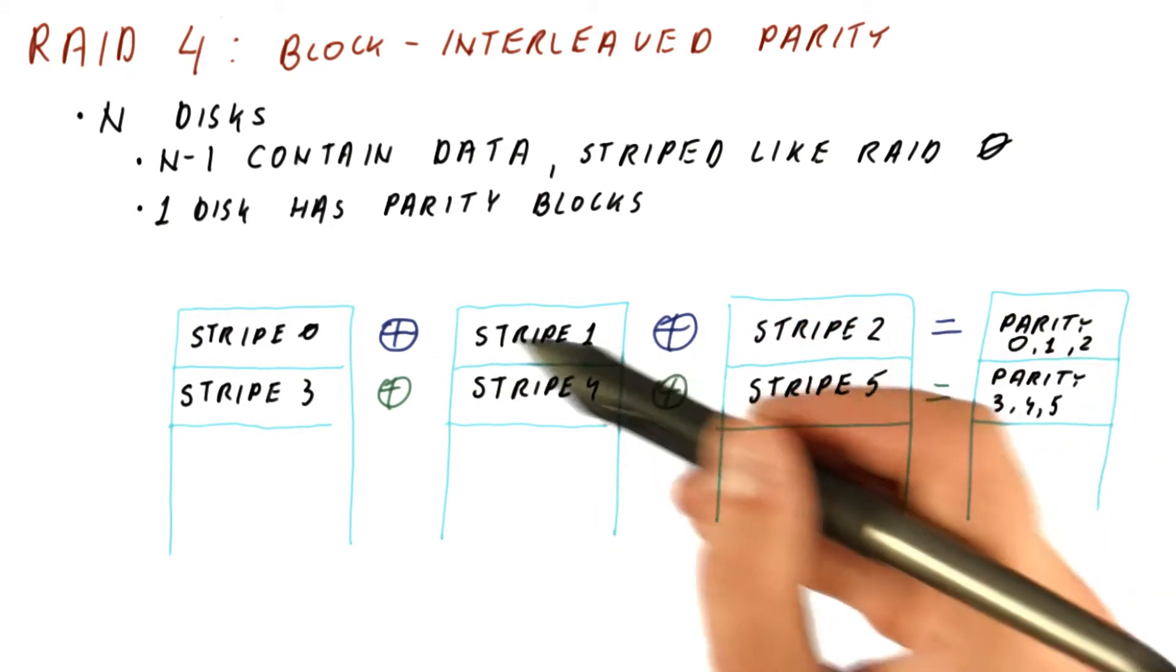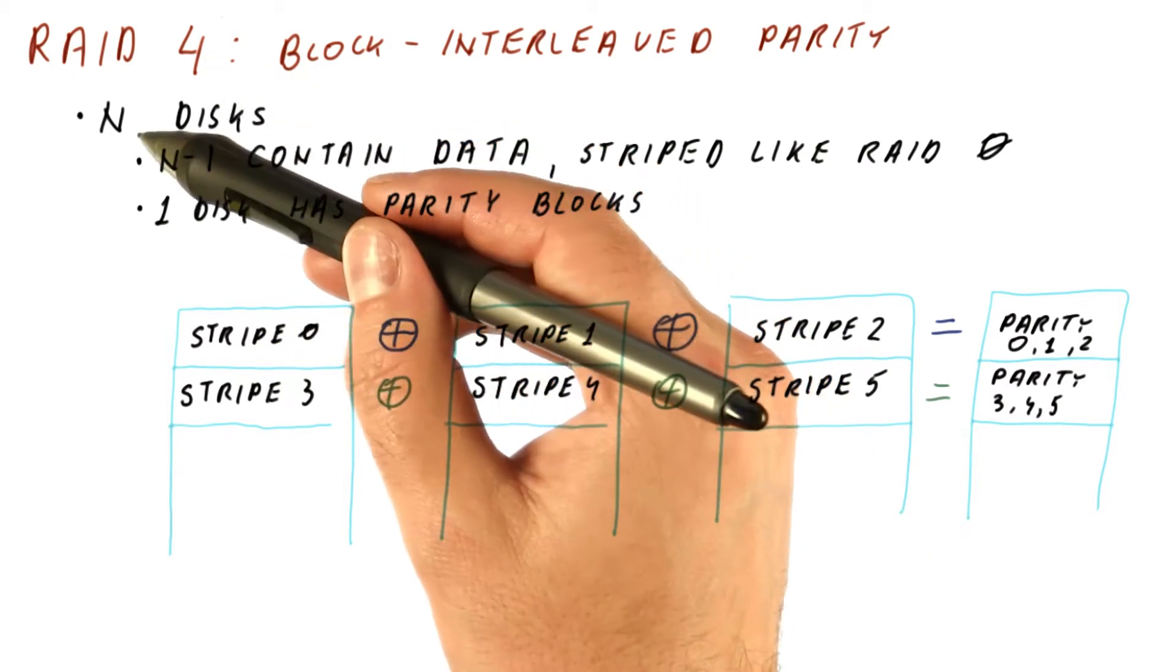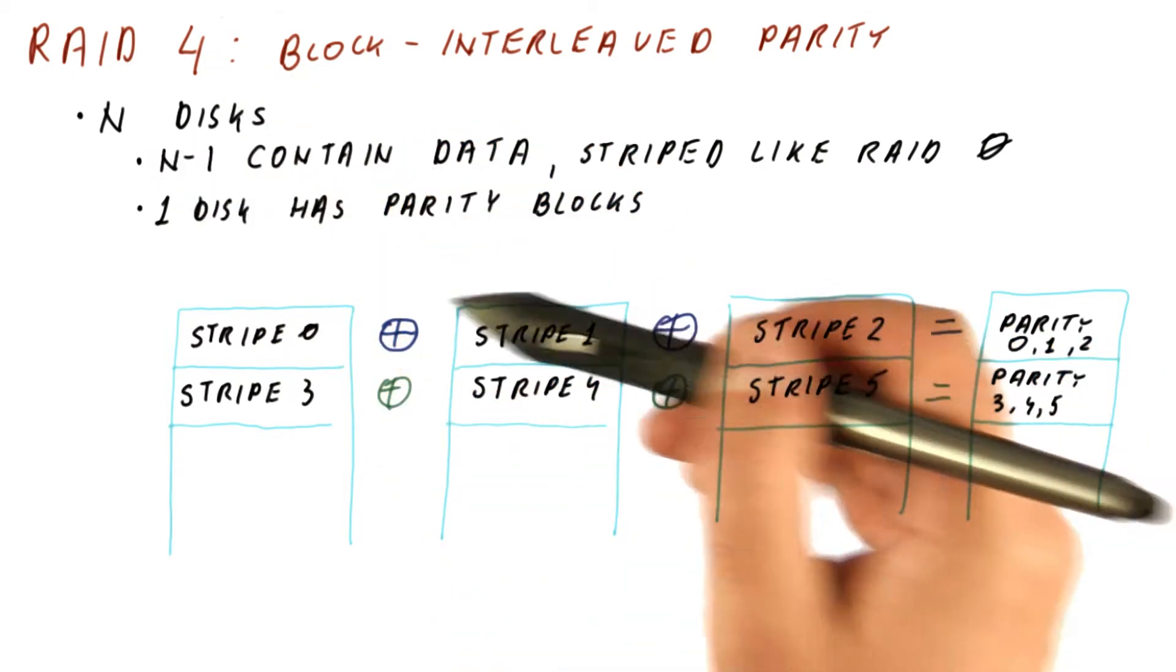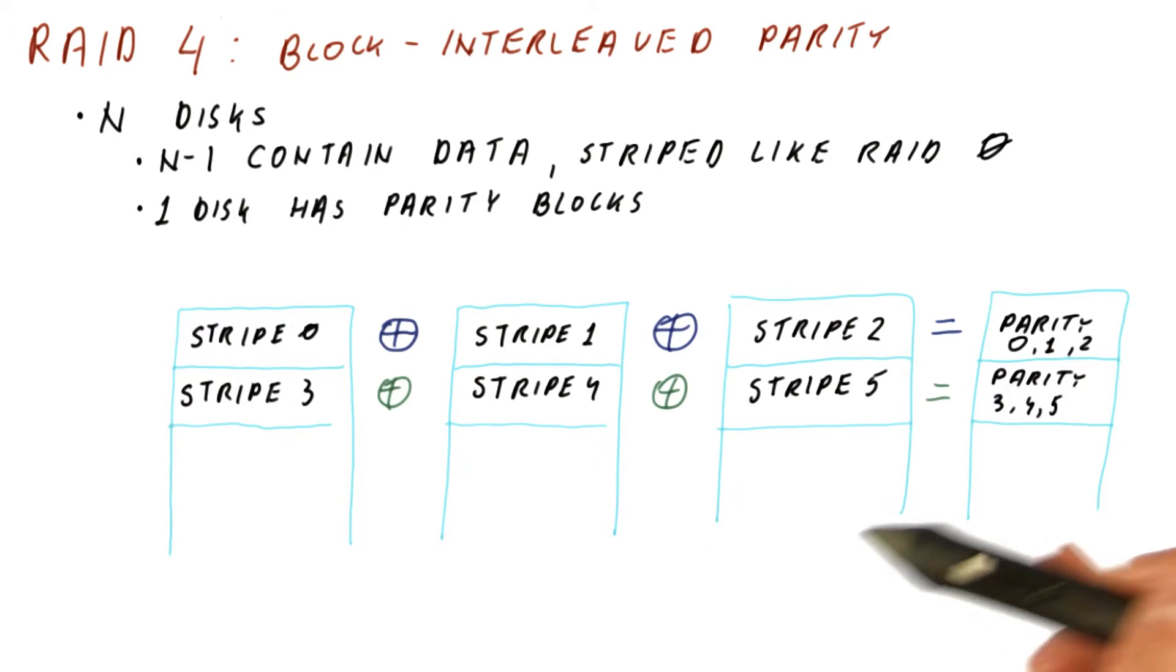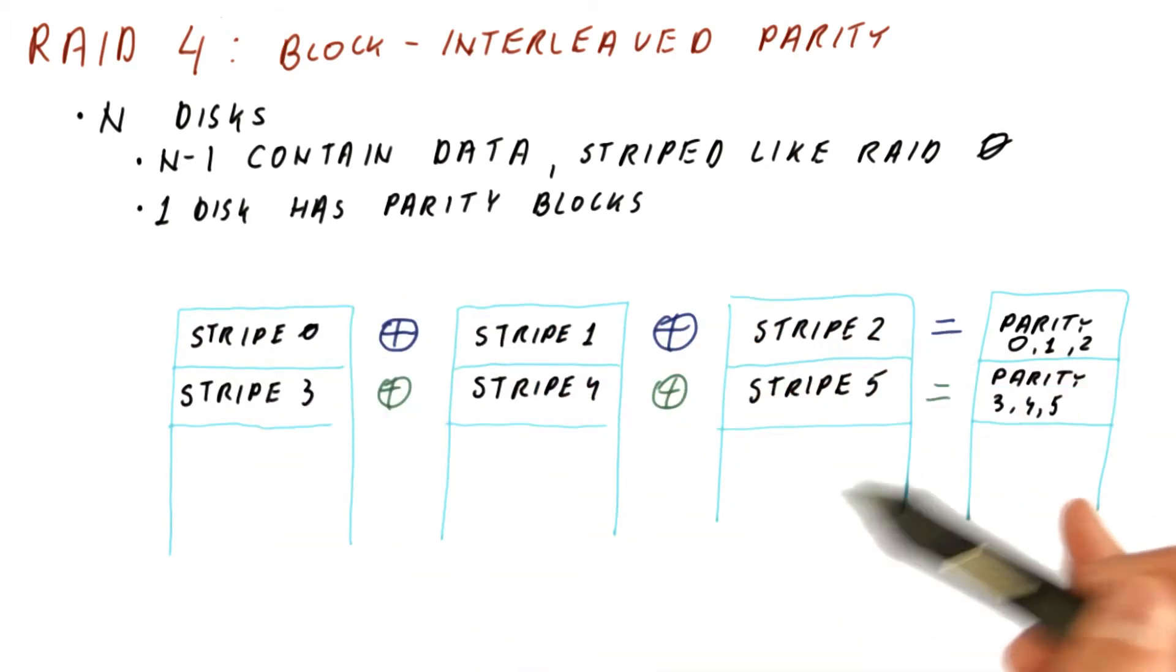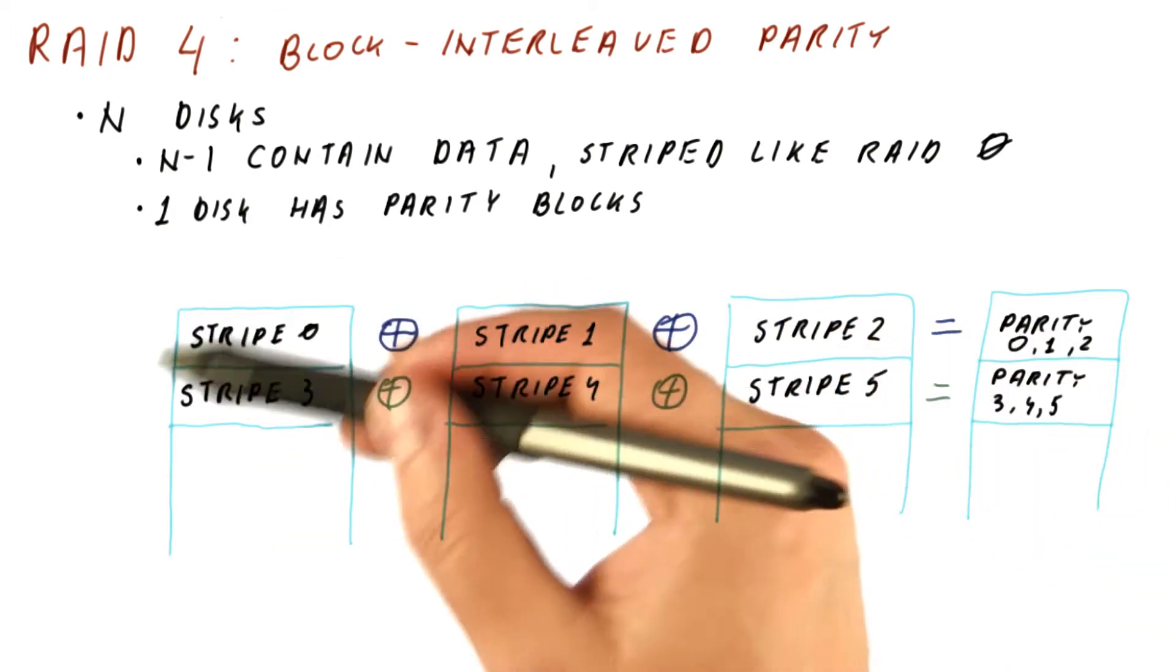So mirroring is just an extreme case of RAID 4 when n is just two. But you want to go to more than two with RAID 4, because that allows you to have lower cost, while still being able to recover from losing one disk.